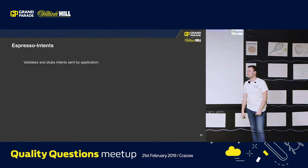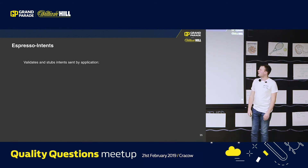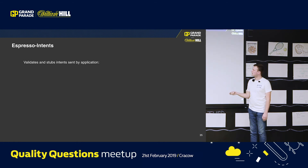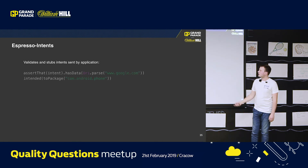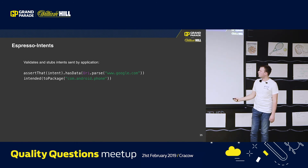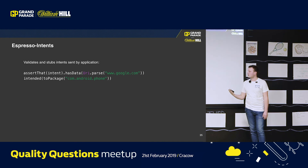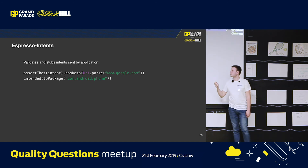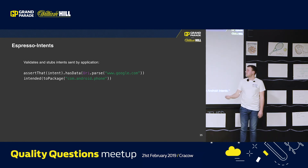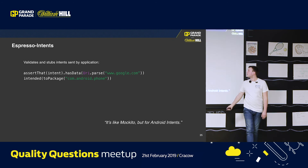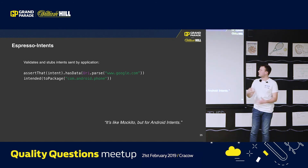Moreover, Espresso can test contracts with third-party apps and the system — it will validate or stop intents sent by the application. Those look like assertions that, for example, this intent is opening the browser with google.com and another is opening your caller application. Those are different types of how to assert the intent, and basically they act like mock validation, which is quite common.